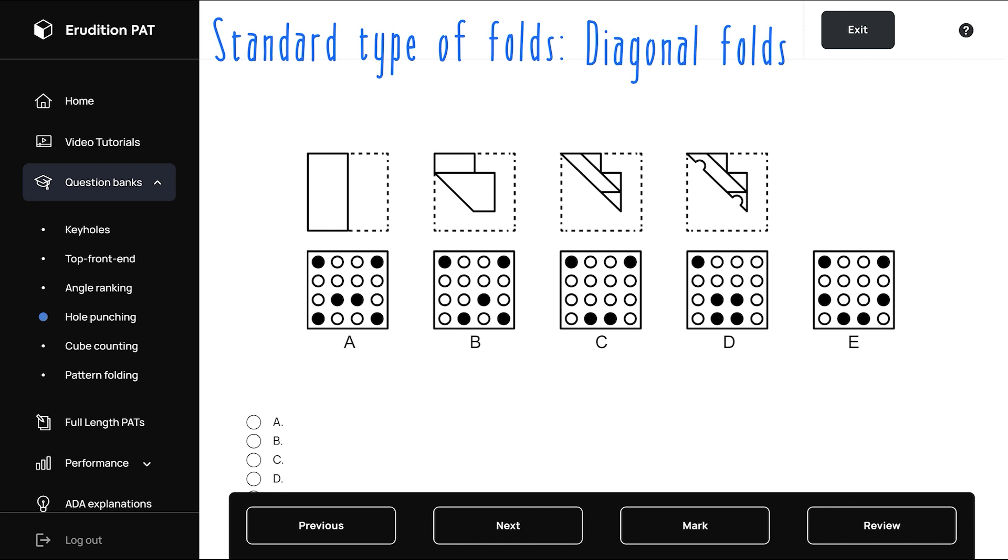Starting off by figuring out how this problem folds, we have a half vertical fold to the left. Then there is a diagonal fold along this axis. And then finally another diagonal fold in the same direction. And this is then followed by two half holes punched along that last crease.